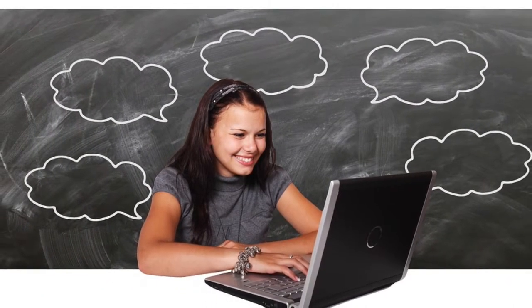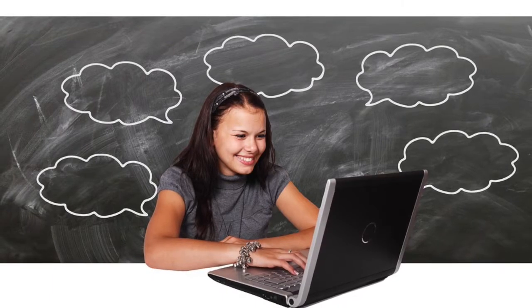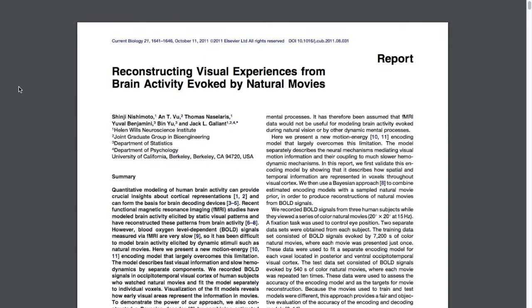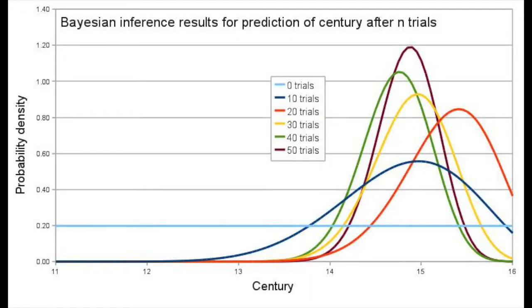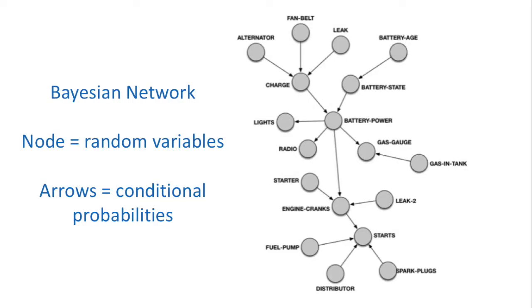First, we're going to talk about how you convert the thoughts in somebody's head into actual pictures and video. In a study in 2011, scientists used this type of artificial intelligence called Bayesian inference. The way Bayesian inference works is you have a network that represents the probabilities and correlations that you believe to exist in the world.